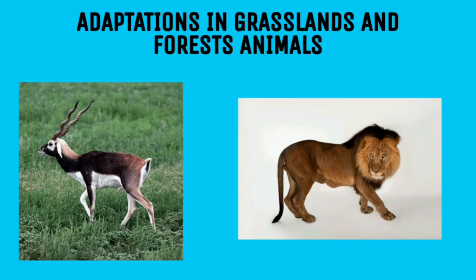The eyes of herbivores like the black buck are located below the forehead on either side of the head. This gives them a wide-angle vision, which helps them to protect themselves from predators. Their legs are long and tapering with strong hooves, enabling them to run fast and take long leaps. Their long and freely moving ears can receive sound from long distances and different directions.